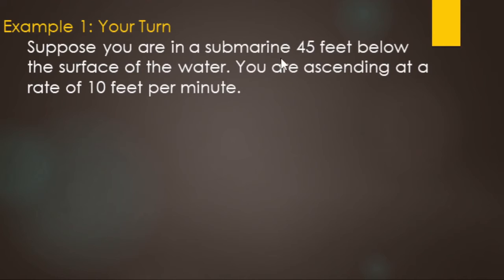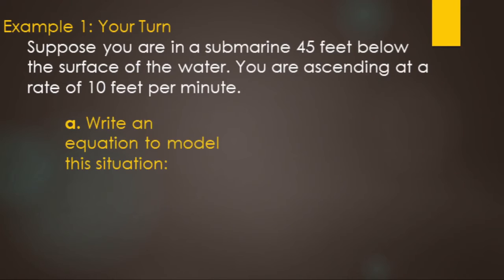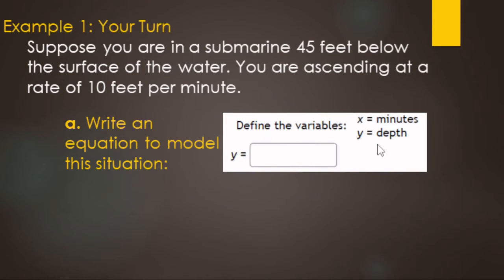For the second example: suppose you're in a submarine 45 feet below the surface of the water, ascending at 10 feet per minute. We need to write an equation to model this. We'll use Y for depth and X for minutes — though you could also use D and M, or T for time.